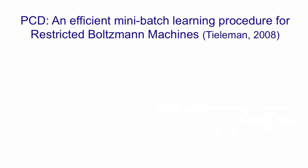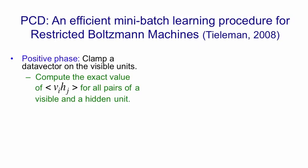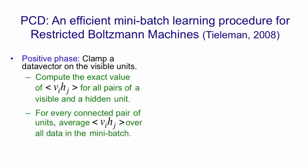If you want to make a good model of a set of binary vectors, the right algorithm to use for a restricted Boltzmann machine is one introduced by Tielemann in 2008 based on earlier work by Neil. In the positive phase, you clamp a data vector on the visible units, then compute the exact value of the expectation v_i h_j for all pairs of visible and hidden units. You can do that because v_i is fixed and you can compute p_j exactly. Then for every connected pair of units, you average the expected value of v_i h_j over all the data vectors in the mini-batch.